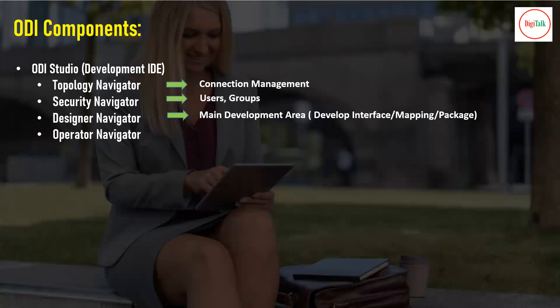Designer Navigator is the main development area where you develop interfaces, mappings, and packages. In the 11g version these were called interfaces; from 12c onwards they are called mappings. A package is a grouping of mappings. Development includes mapping fields from source tables to target tables, defining transformations, and specifying which field from the source goes to which field in the target database.